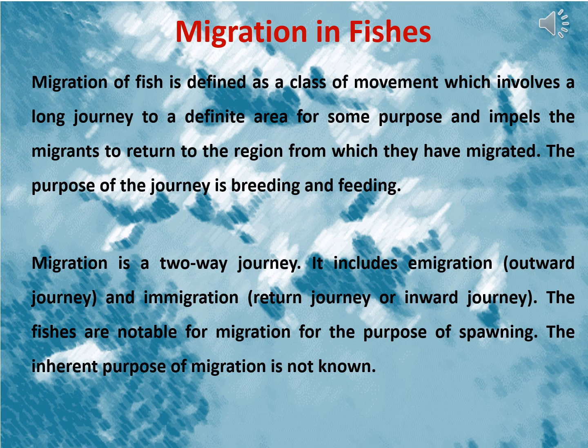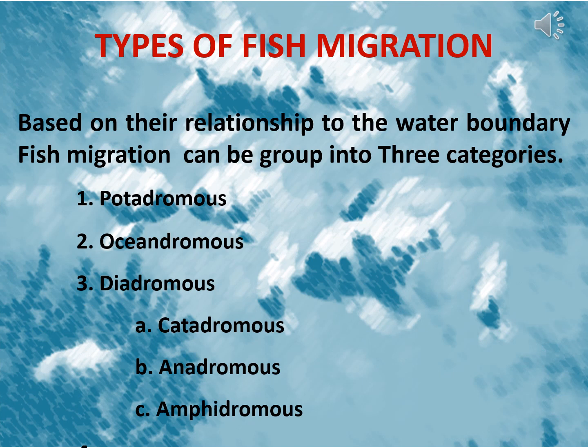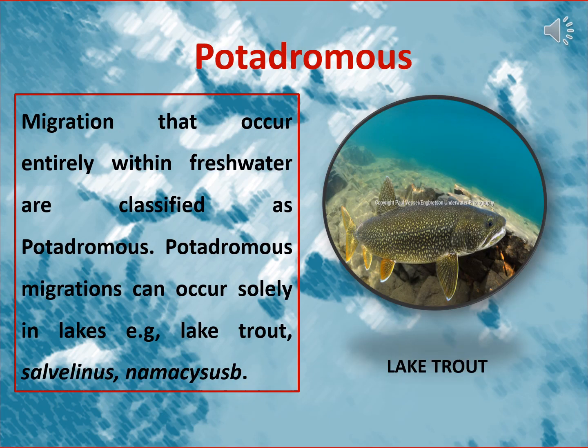Fishes are notable for migration for the purpose of spawning. The inherent purpose of migration is not known. Based on their relationship to the water boundary, fish migration can be grouped into three categories: Potamodromus, Oceanodromus, and Diadromus migrations. Migrations that occur entirely within freshwater are classified as Potamodromus. These migrations can occur solely in lakes. An example is lake trout.